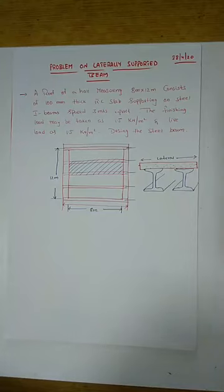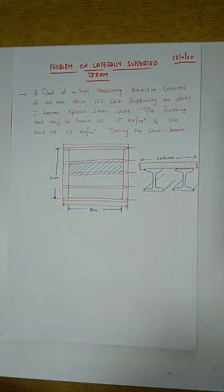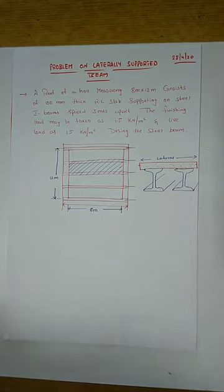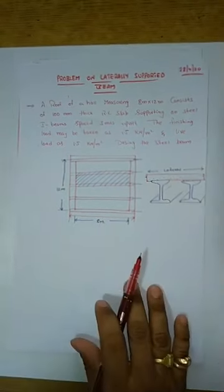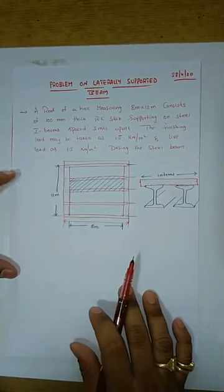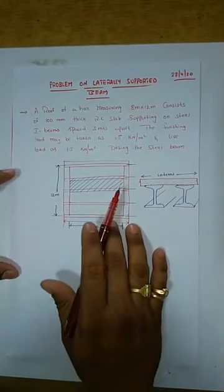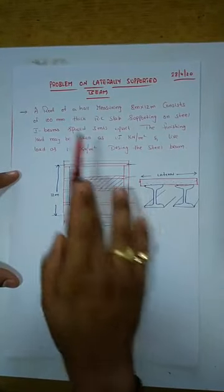Good afternoon everyone. So today we are going to discuss a problem on laterally supported beam. It is called a laterally supported beam because the roof of a hall measuring 8 meters by 12 meters is resting on it.